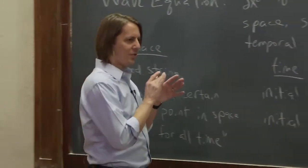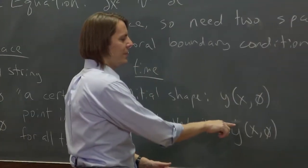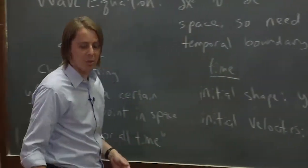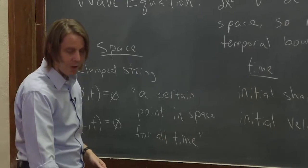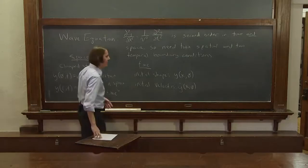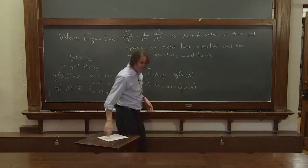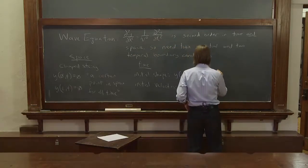So this is not the velocity down the string. This is the transverse velocity, dy/dt, of the thing moving up and down. That's the initial velocity sort of shape. And this is a certain point in time for all space. So they're kind of symmetric.